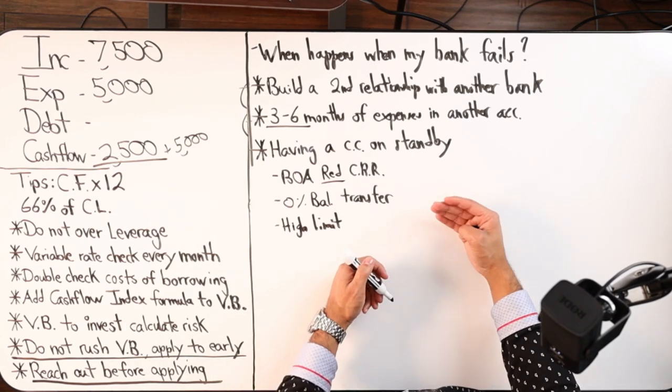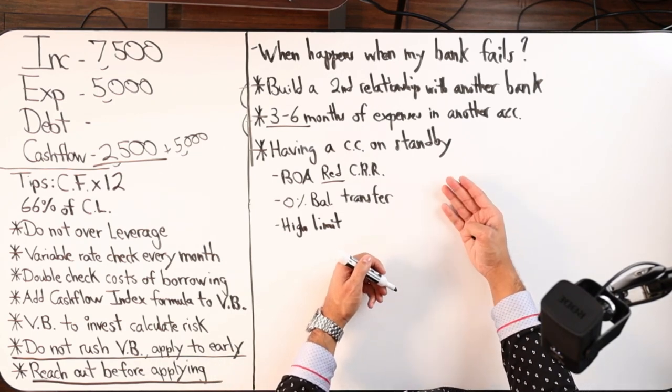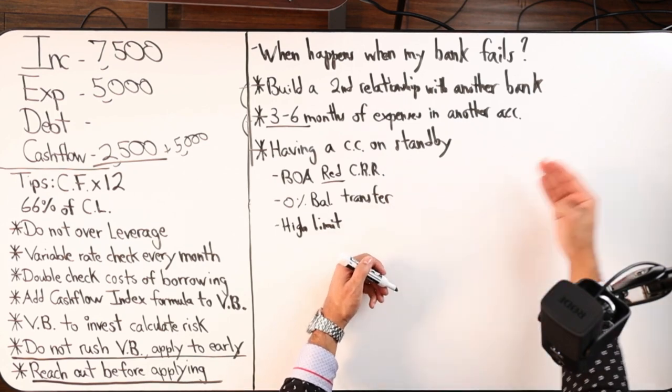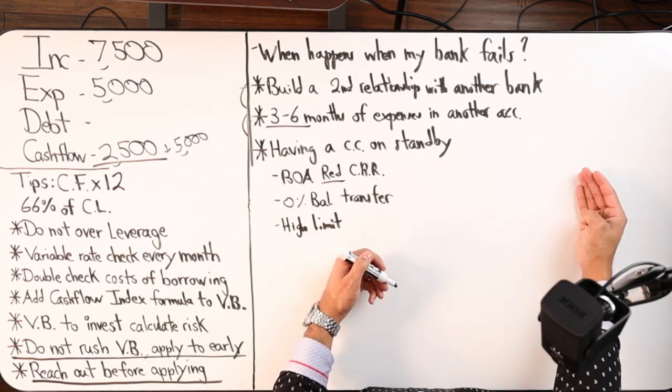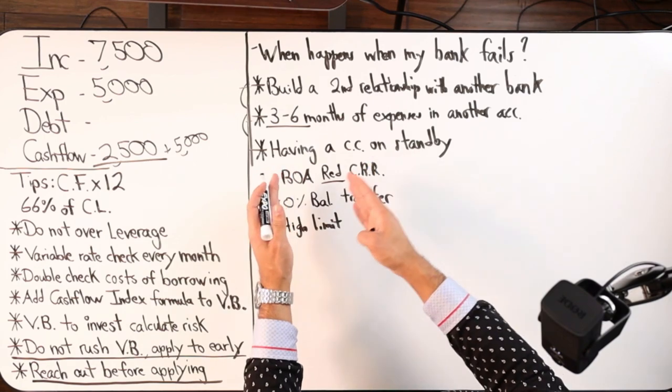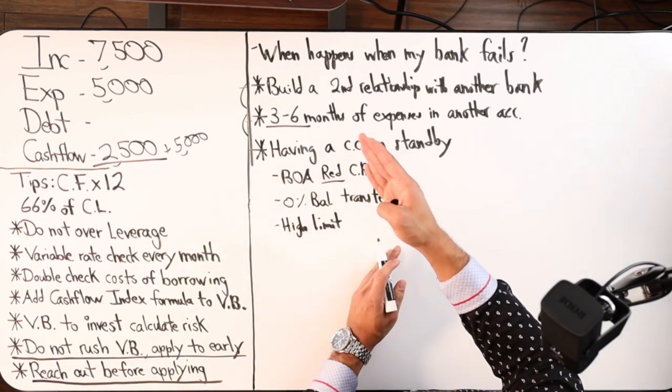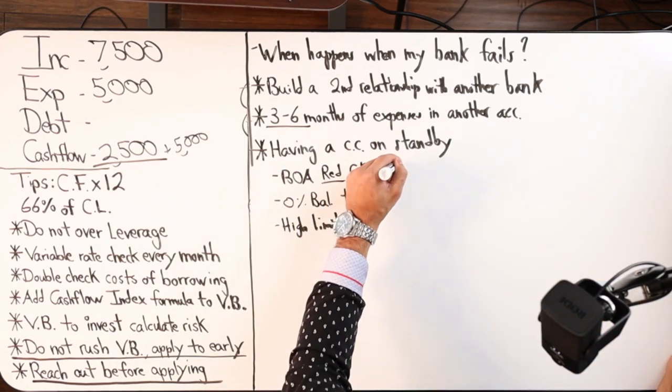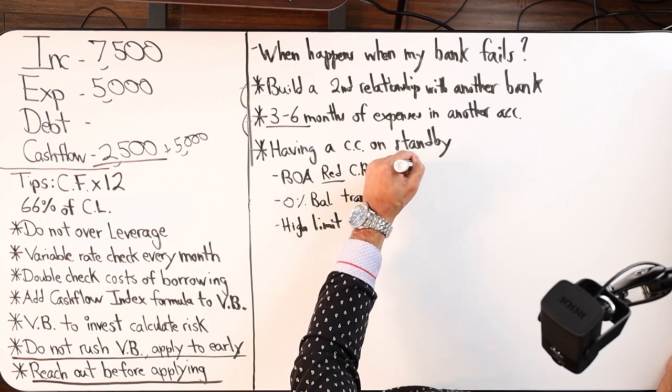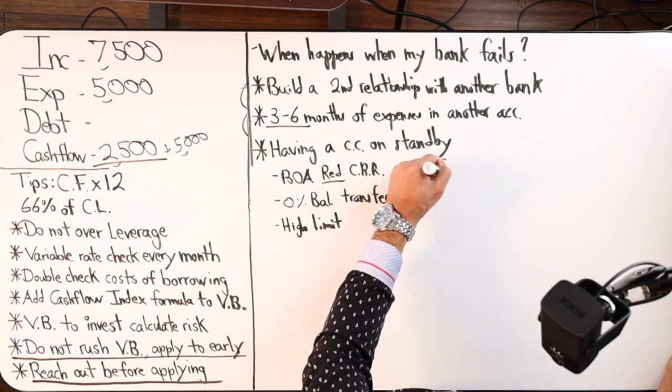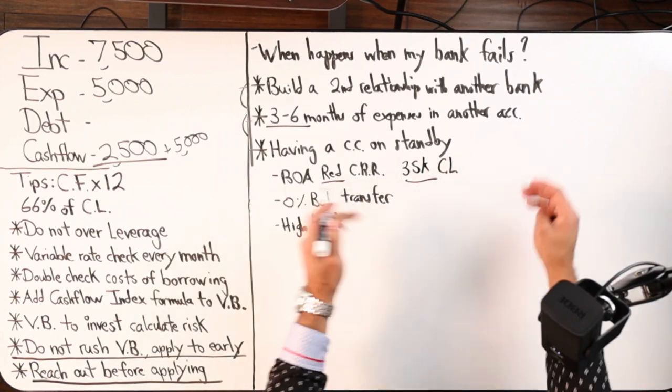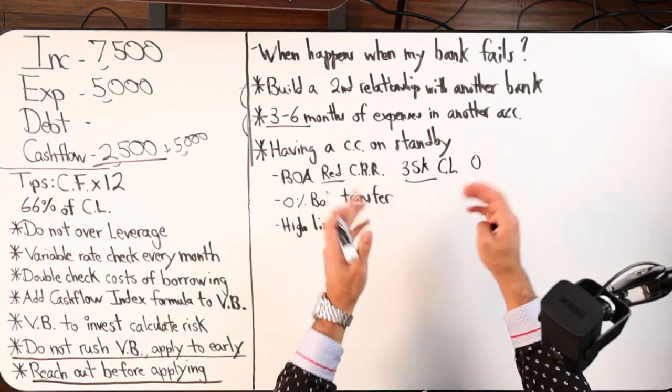You would call that specific institution, that specific bank, and just ask them how often can I apply for a credit line increase. You're just going to keep asking for a credit line increase. I've had this Bank of America red cashback rewards card for almost a decade. I think my credit limit is right around 35K and it's always at a zero balance.